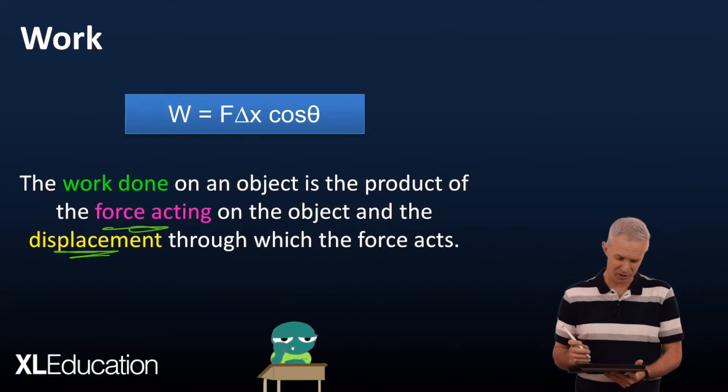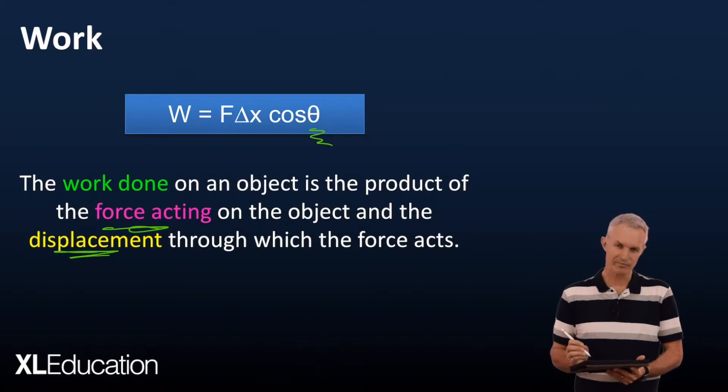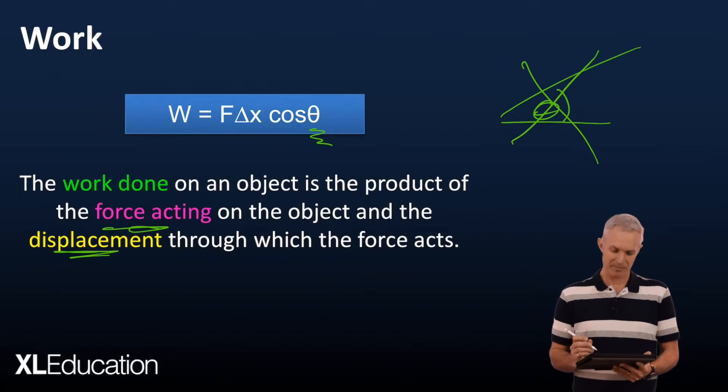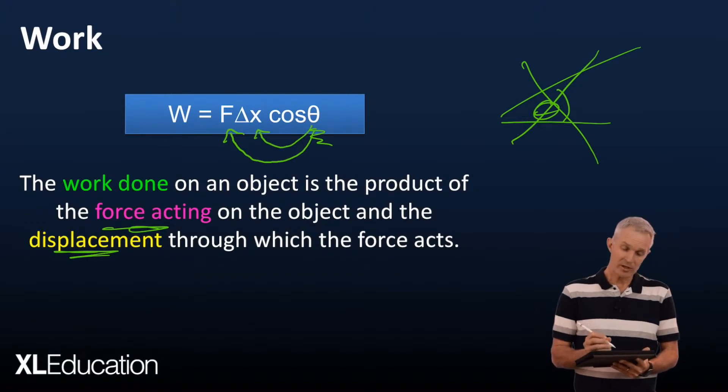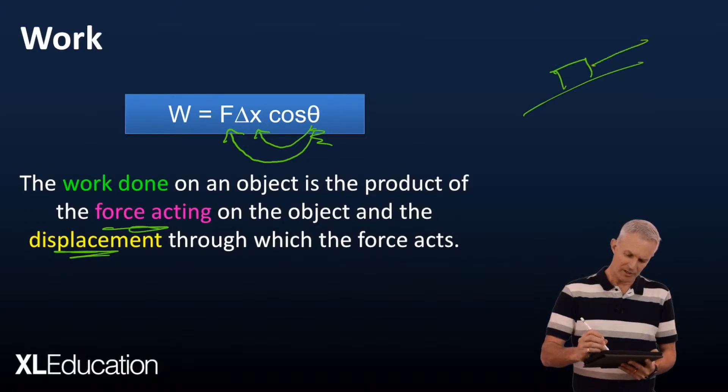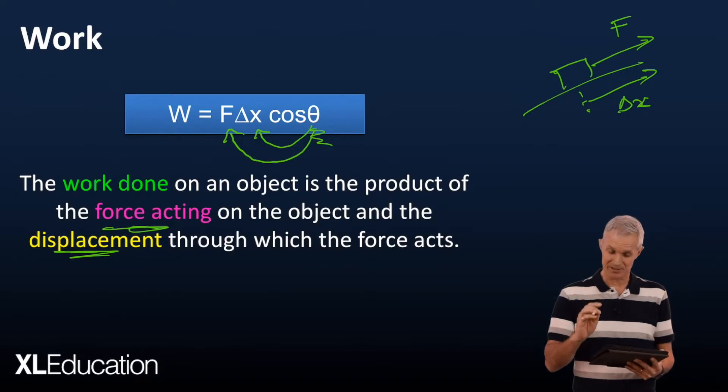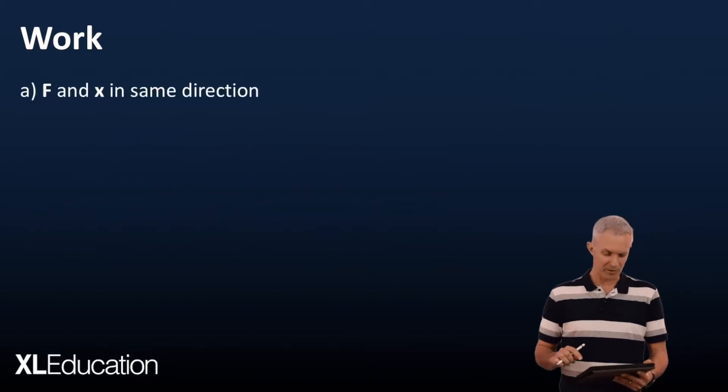One other thing to look at, just before we look at a few examples, is this whole thing of theta. What is that theta about? So it's not this kind of theta, don't get confused with that. The theta that we're looking at here is the angle between the F and the X. So for example, if we had a car on a slope or an object on a slope like this, and it's being driven up the slope, can you see that those are actually pointing in the same direction? The angle between those two is in fact zero. So it's the angle between F and X, not the angle of the slope. Let's have a look at a few examples to see how this concept of work works.